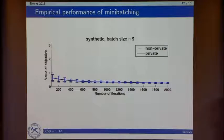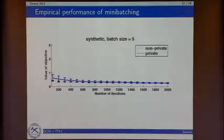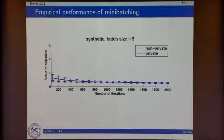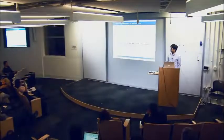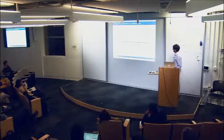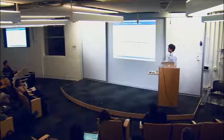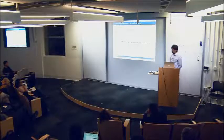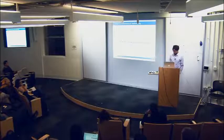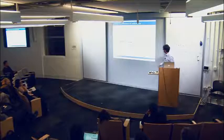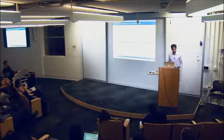Suddenly it's much, much better — and this is only with batch size five. A really small batch size takes what looked like garbage before and makes it actually really good. Same thing happens for KDDCup with batch size five, and MNIST with batch size ten. The moral is: mini-batching helps a lot, even small mini-batching helps a lot.